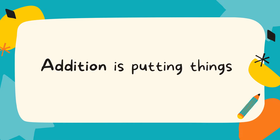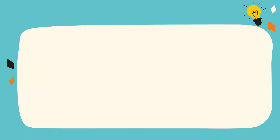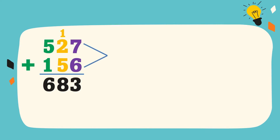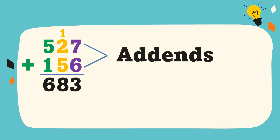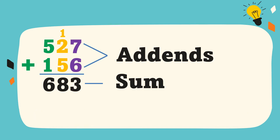Addition is putting things all together. Let's study the parts of addition. 527 and 156 are addends, and 683 is the sum. Addends are numbers to be added.